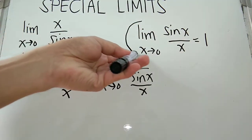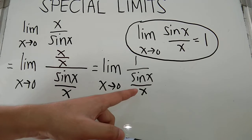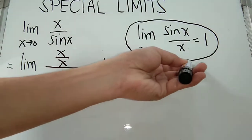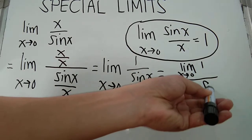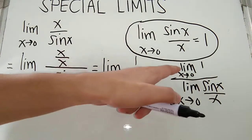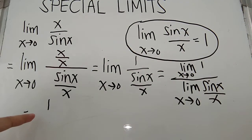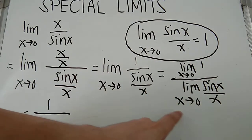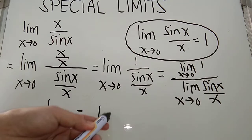Our basis is the special limit theorem. In finding the limit of a rational expression, we have to give a limit to both numerator and denominator. So this is the limit of 1 as x approaches 0, over the limit of sin x over x as x approaches 0. The numerator is the limit of a constant, and the limit of a constant is that constant. The limit of sin x over x as x approaches 0 equals 1 by the special limit theorem. So we have 1 over 1, which equals 1. This is our limit value.